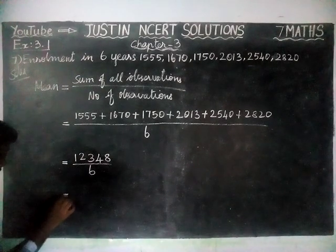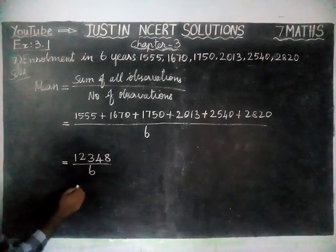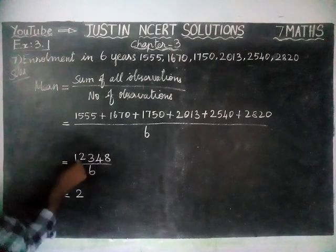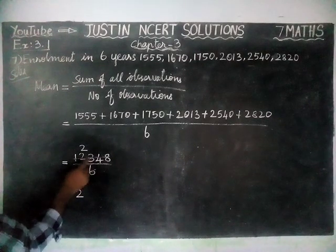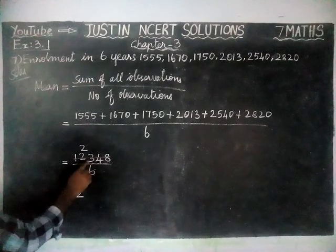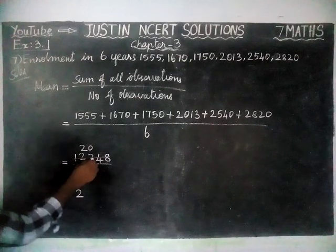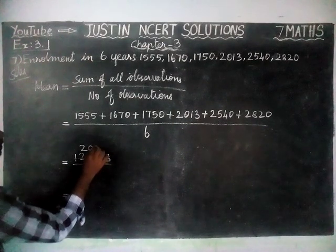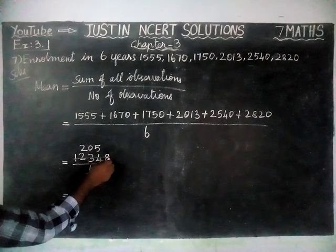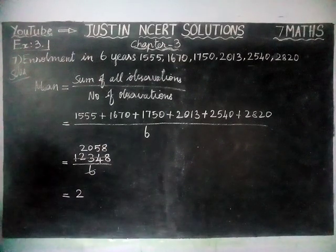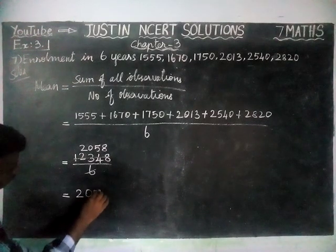Now, we are going to divide 12348 by 6. In the first 2 digits, 12: 2 sixes are 12, remaining 0. Bring down 3 — cannot divide 3 by 6, so take next 2 digits: 34. Add 0 to quotient. 6 fives are 30, remaining 4. Now 48: 6 eights are 48. So the answer is 2058.